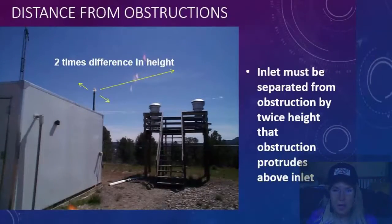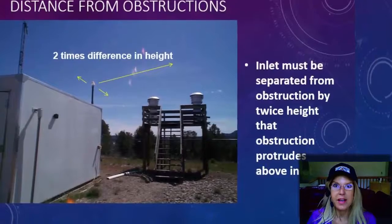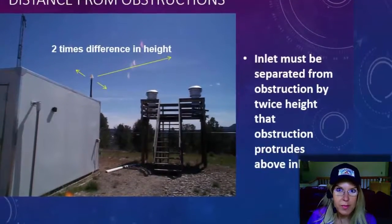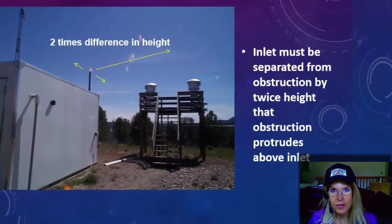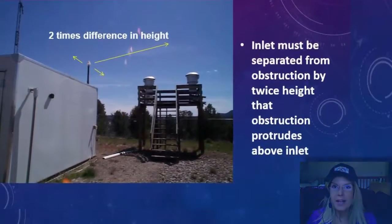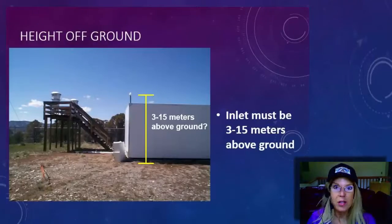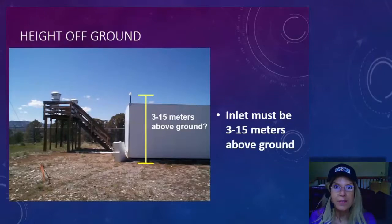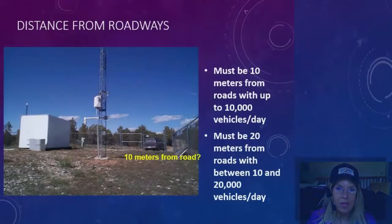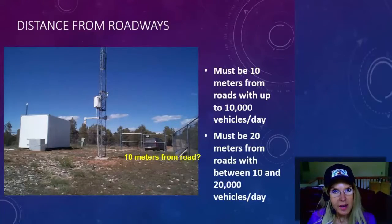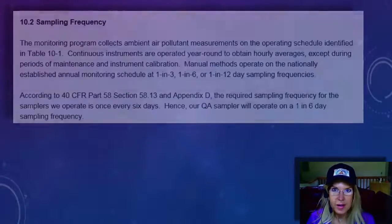Also, the actual probe itself. So where is it that you're actually sucking the air from for ambient air quality monitoring, for example. You need to make sure that the actual probe, the inlet, meets the requirements. It's not too close to the ground. It meets the requirements in terms of not being too close to a road. These sorts of things, you need to just describe and say how your location meets them.